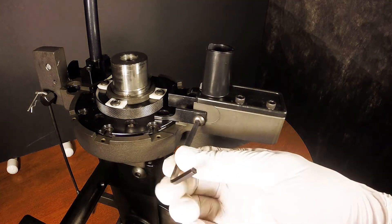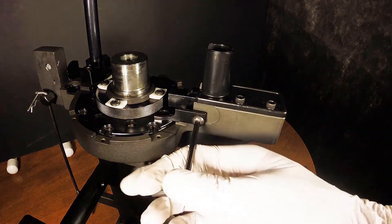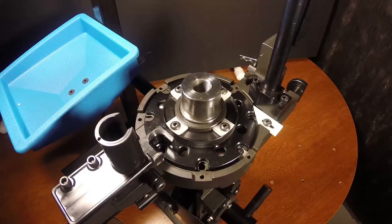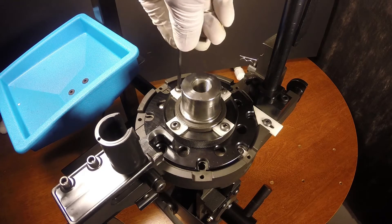Loosen the ejector tab screw and swing the ejector tab out of the way. Loosen the four locator tab screws.